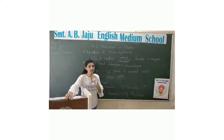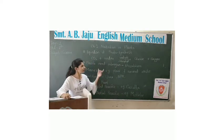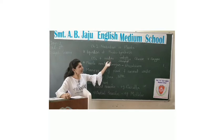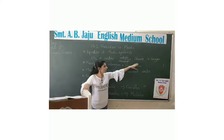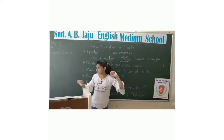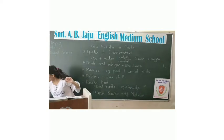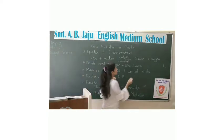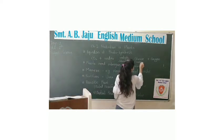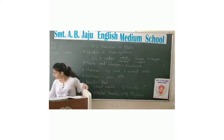Plants require chlorophyll and sunlight to make food. And the food produced is glucose and oxygen. Glucose is nothing but sugar. Plants produce sugar and oxygen.